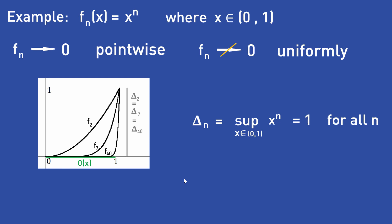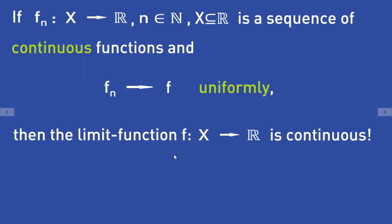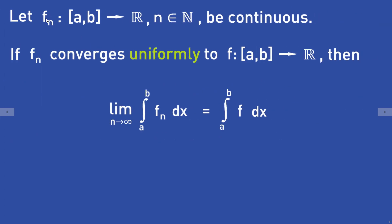At the end of this video, I want to show you two properties of uniform convergence that illustrate why this concept can be helpful. First, if fn is a sequence of continuous functions and fn converges to f uniformly, then the limit function f is continuous too. The second property is about integrals: if fn is a sequence of continuous functions from an interval [A, B] to ℝ and fn converges uniformly to a limit function f, then the sequence of integrals of fn converges to the integral of the limit function f.